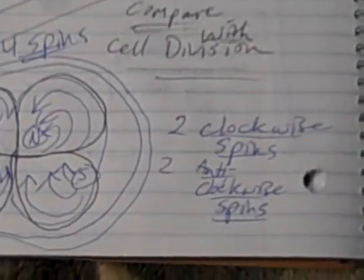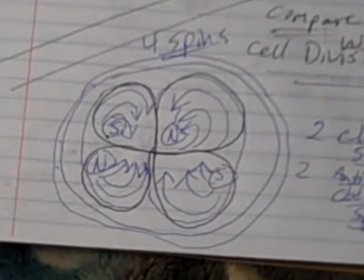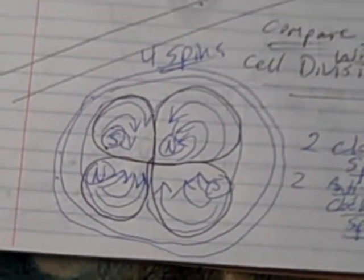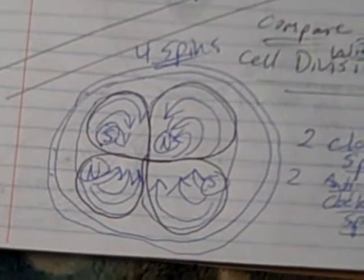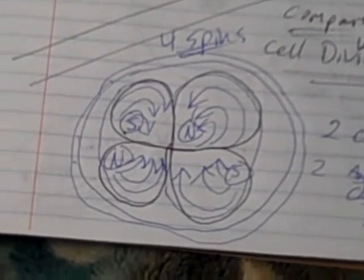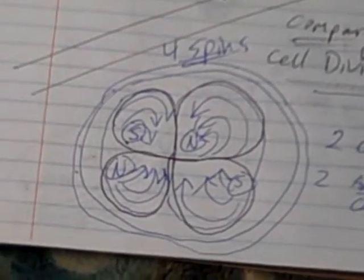Two of them are clockwise, and two of them are anti-clockwise. And you can see this same figure-eight pattern. And, presumably, two distinct currents. Magnetic currents, presumably. One flowing north and one flowing south.